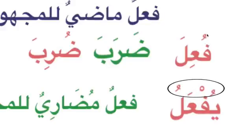The striking feature is that the alamat mudhari is having damma and the ayin kalima is having kasra. In the three-letter form, the fa kalima is having damma and the ayin kalima is having kasra. So ayin kalima kasra with damma before it is maadi, and ayin kalima fatha with damma on the alamat mudhari is your mudhari lil-majhul.